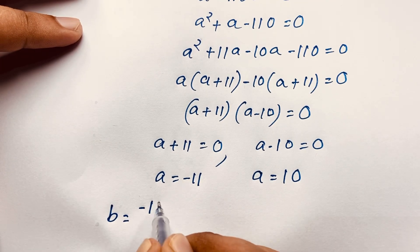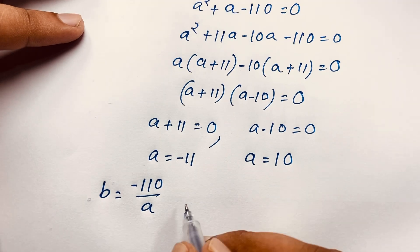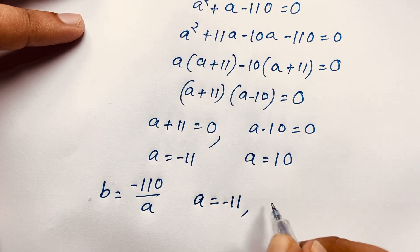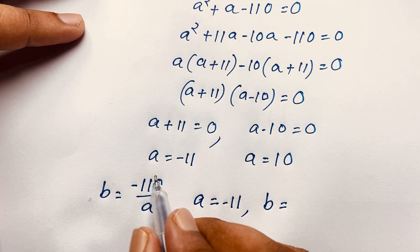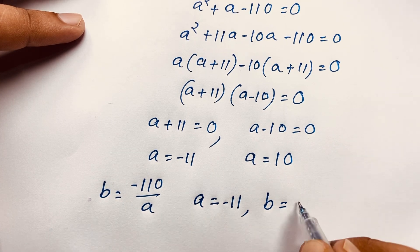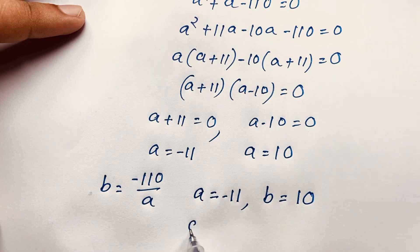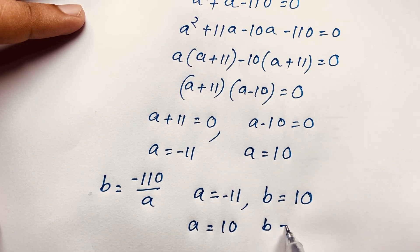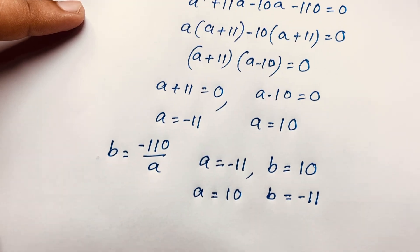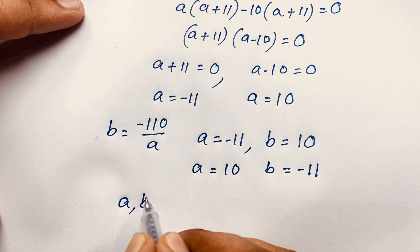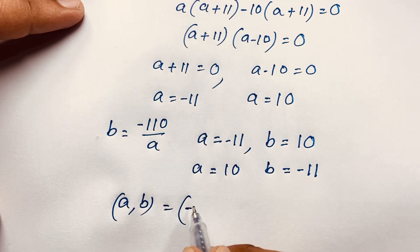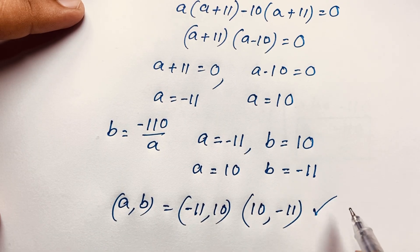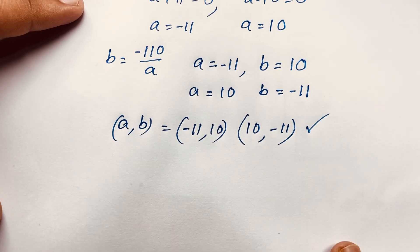Recall that b equals minus 110 over a. When a equals minus 11, b equals minus 110 over minus 11, which equals 10. When a equals 10, b equals minus 110 over 10, which equals minus 11. So our final answer is: (a, b) equals (minus 11, 10) or (10, minus 11).